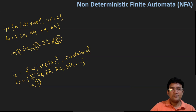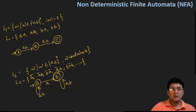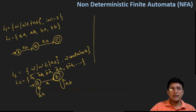So A is the start state and the smallest string that should be accepted is A, so B should be the final state. In the beginning I may get A or B — I'm not concerned about that. In the end also I may get A or B — I'm not concerned. I'm only concerned about the one A that comes either at the beginning, end, or somewhere in between. This is the NFA for L2.